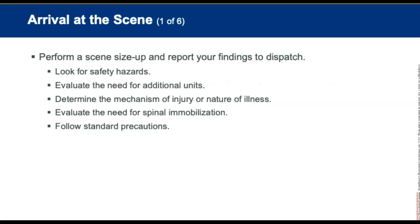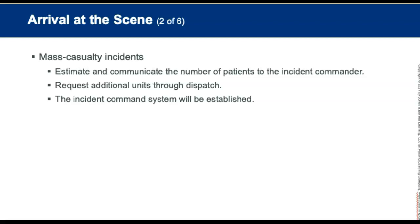The fourth phase is arrival at the scene. If you are the first to arrive, perform a scene size-up and give a brief report of your findings to dispatch. Look for safety hazards for yourself, your partner, bystanders, and the patient. Evaluate the need for additional units or other assistance, determine the mechanism of injury and nature of illness, evaluate the need for spinal precautions, and follow standard precautions. For mass casualty incidents, estimate and communicate the number of patients to the incident commander.